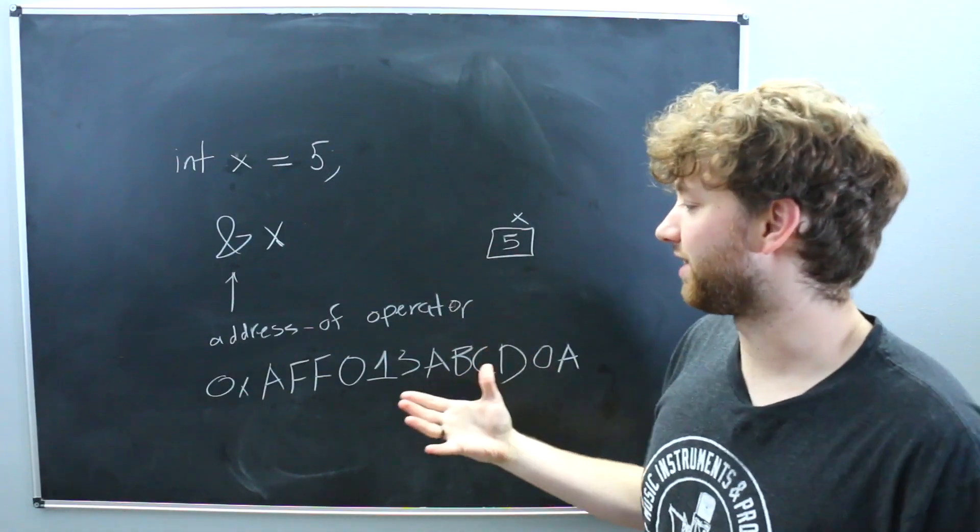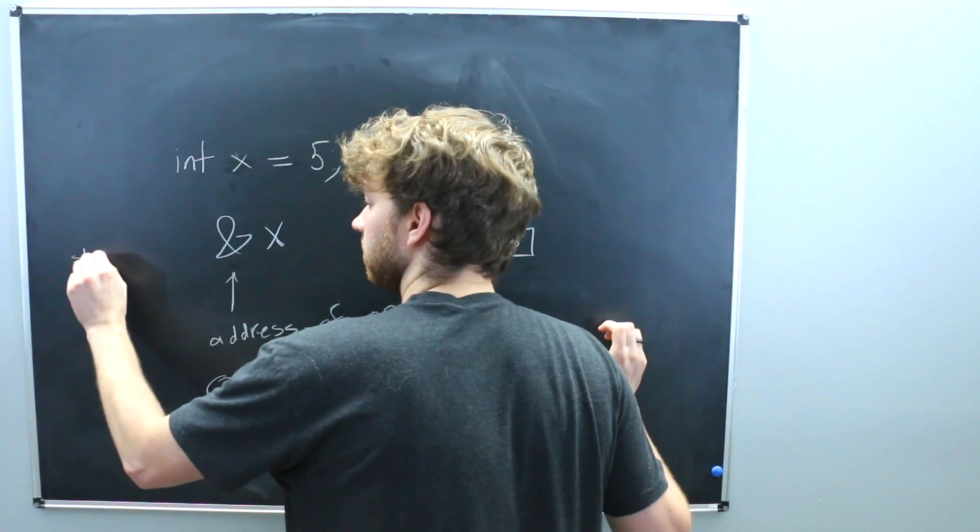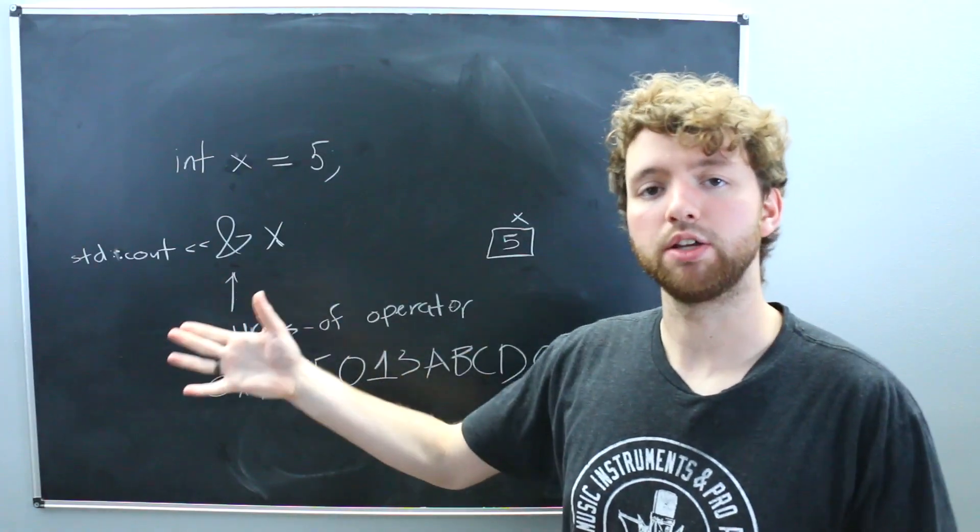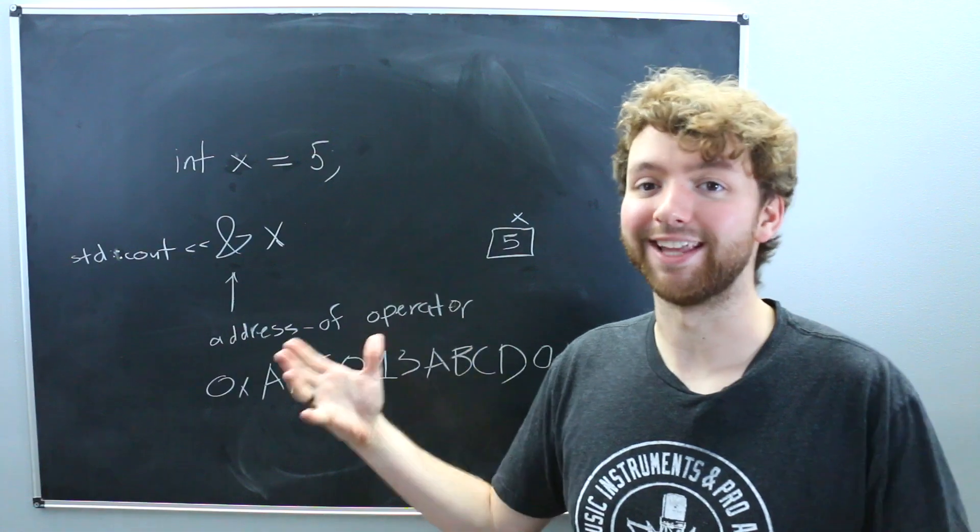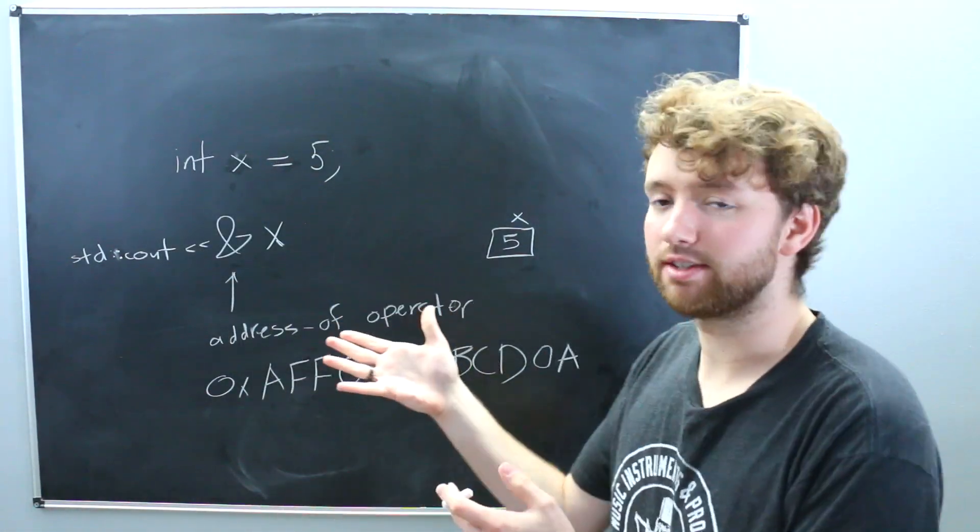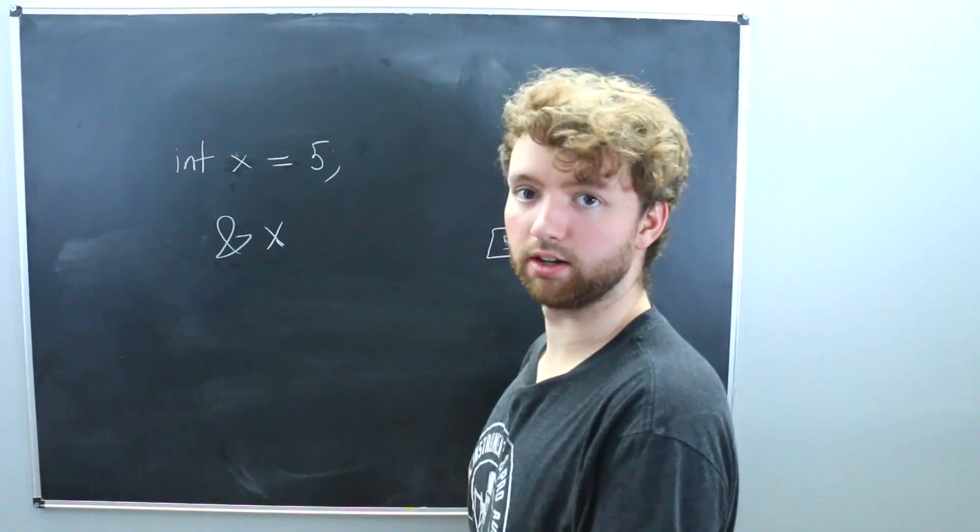And you don't just want to print that out. I mean, you can. You could just say cout like so. You could output that to the console. But you might want to save that and use it later in your code. And that, my friends, is where the pointer comes in. So we can assign this to a variable and use it later. So what in the world is that going to look like?